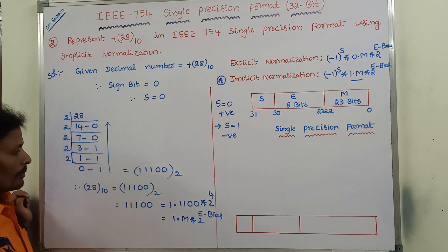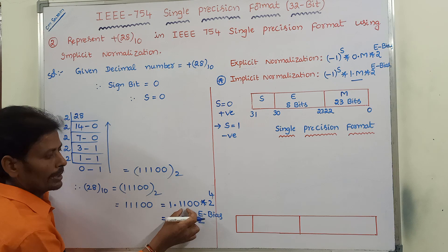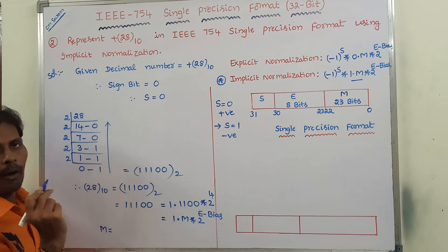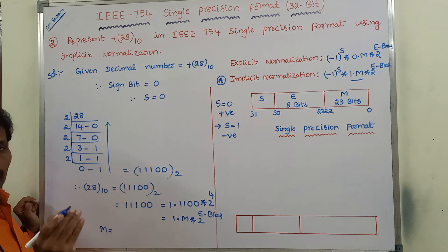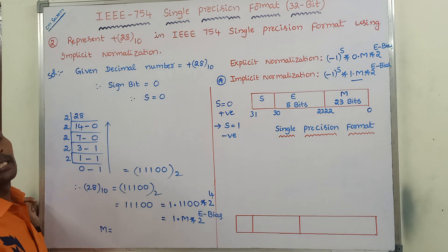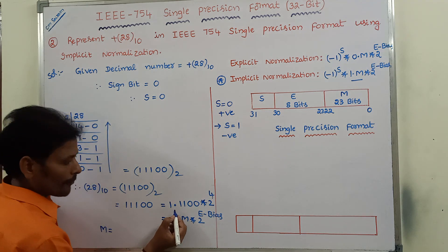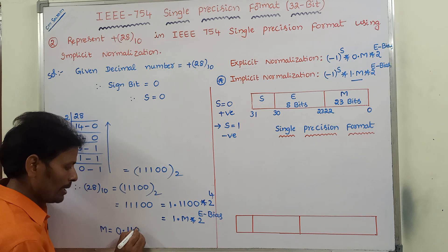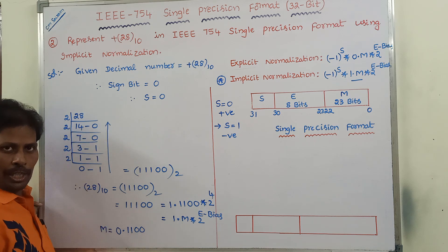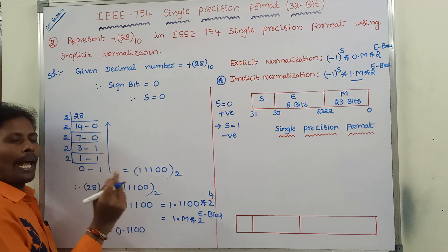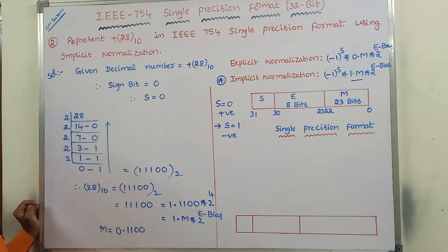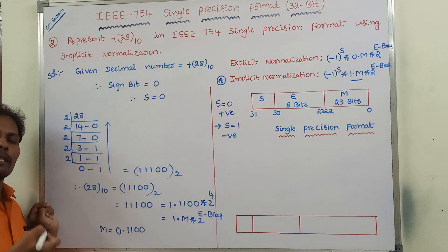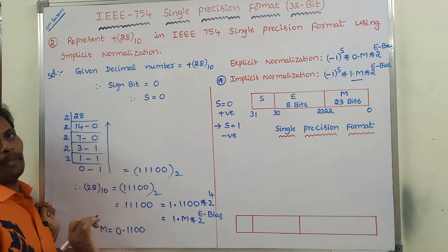Comparing our result with the formula, M is the value after the decimal point, which is 1100. So mantissa M = 1100. Mantissa is always a fractional value — whatever digits appear after the decimal point are treated as mantissa. Trailing zeros can be ignored.